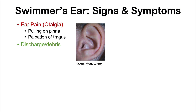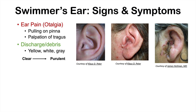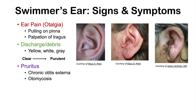Another common sign is discharge or debris. Here are images showing increasing severity of swimmer's ear — from minimal debris, to more discharge, to significant discharge. The discharge can be yellow, white, or gray in color, and can start as clear discharge before quickly becoming purulent or pus-like. Pruritus, or itching, is also common — more likely to occur initially with infection and more prominent in chronic otitis externa and in otomycosis, which is a fungal infection of the ear.